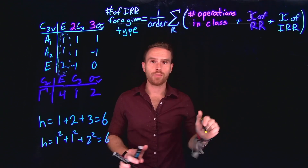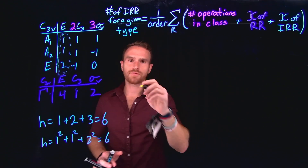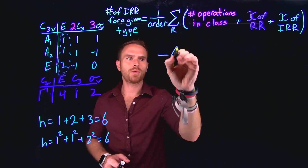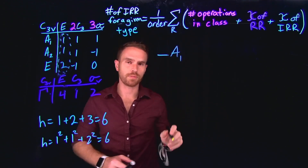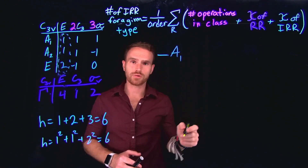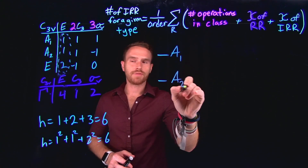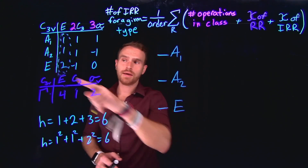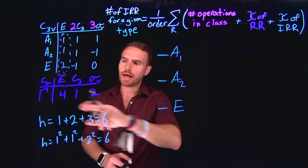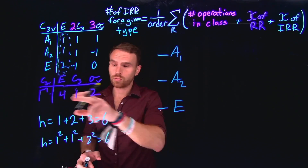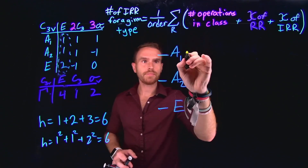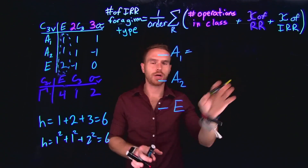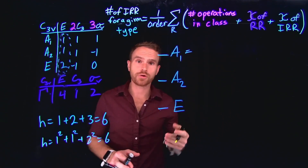Now we have all the different components that make up our reduction formula. This reduction formula tells us the number of irreducible representations of a given type — meaning we can figure out how many A1 irreducible representations there are, how many A2 irreducible representations there are, and how many E irreducible representations there are. These should all add up to the overall reducible representation. I've tried to color-coordinate everything so that you can follow along and do your own examples in the future.